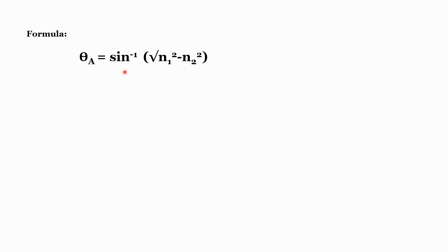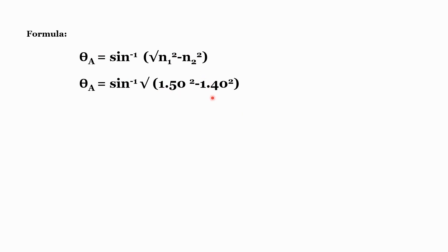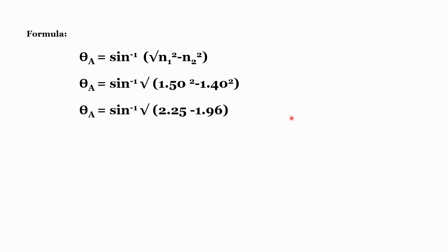The formula for θa is sin⁻¹(√(n1² − n2²)). Substituting: θa = sin⁻¹(√(1.50² − 1.40²)). Doing the calculations, n1² − n2² = 2.25 − 1.96 = 0.29. So θa = sin⁻¹(√0.29).